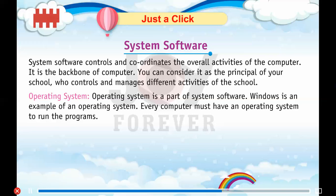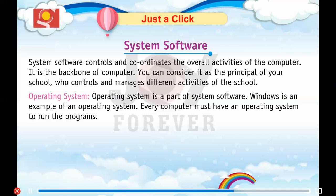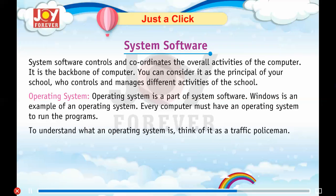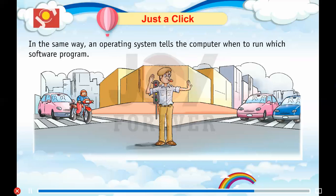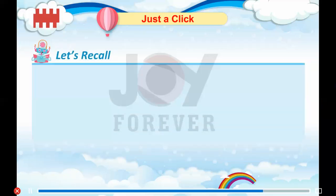Operating system is a part of system software. Windows is an example of an operating system. Every computer must have an operating system to run the programs. To understand what an operating system is, think of it as a traffic policeman. A traffic policeman tells cars and motorcycles when to move, in which direction to move, and at what speed to move. In the same way, an operating system tells the computer when to run which software program.